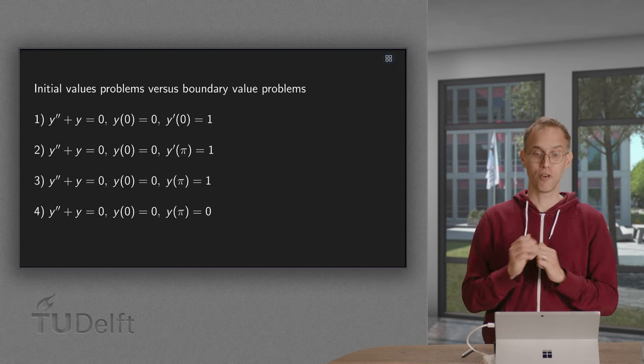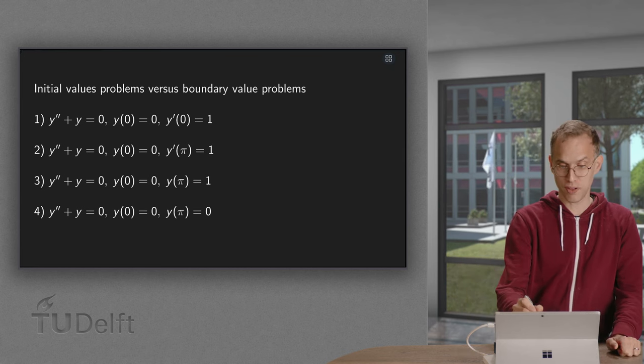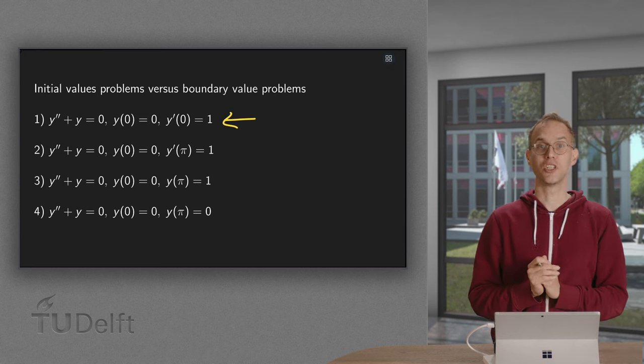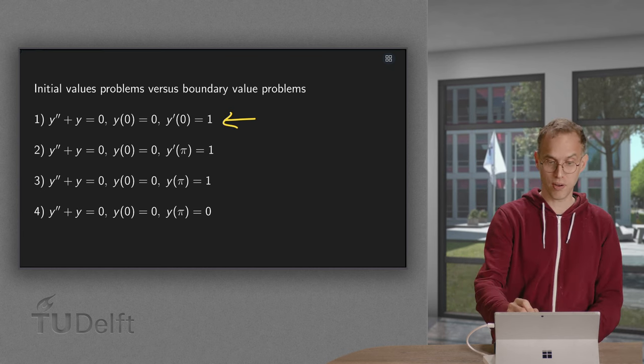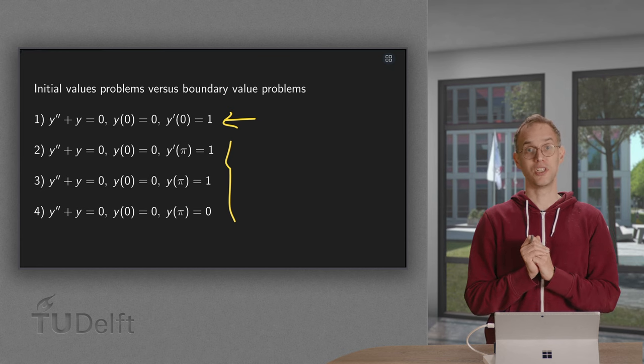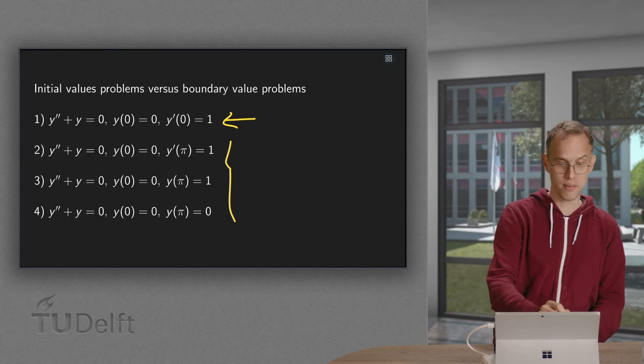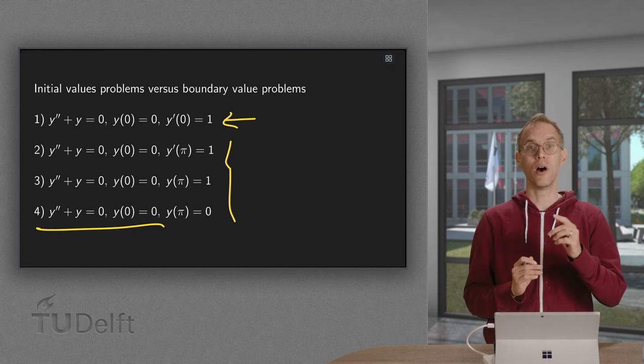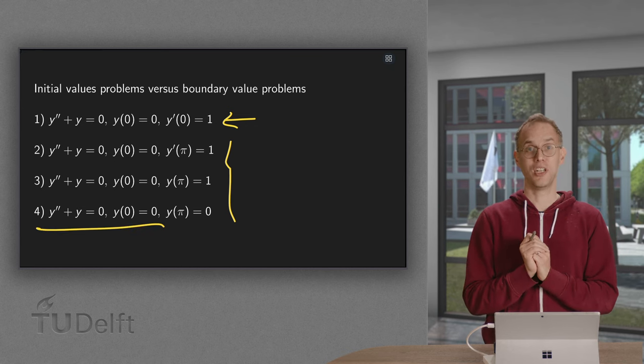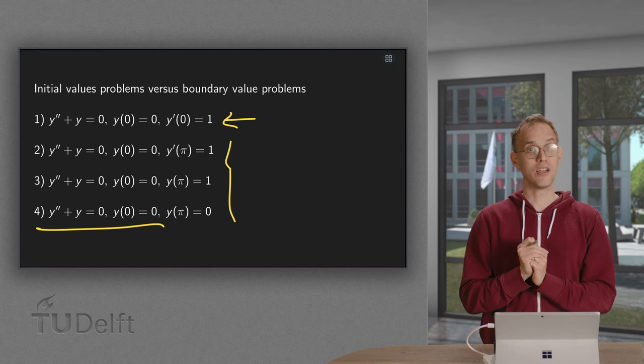Here we have four problems. An initial value problem where both conditions are given at zero, and three boundary value problems where the second condition is given at x equals pi. You see they are almost the same. This part is the same for all of them. Only the second condition is different. Let us just try to solve them.